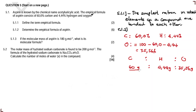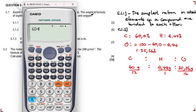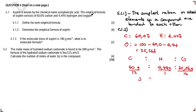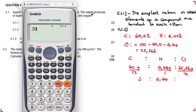We then divide each mass by its molar mass: carbon divided by 12, hydrogen divided by 1, and oxygen divided by 16. So 60 ÷ 12 = 5, 4.44 ÷ 1 = 4.44, and 35.56 ÷ 16 = 2.22.